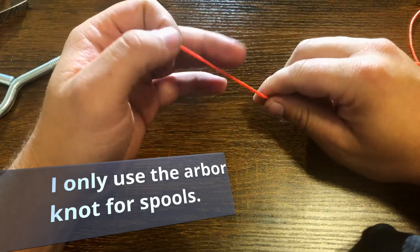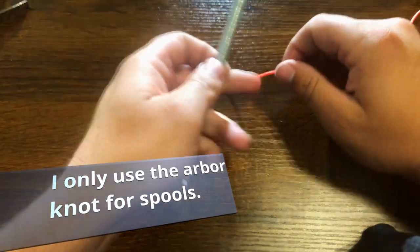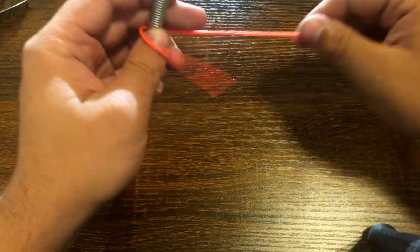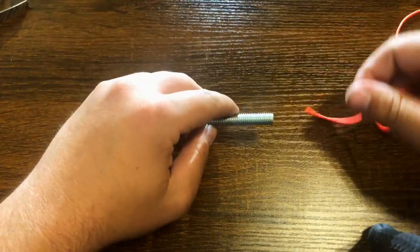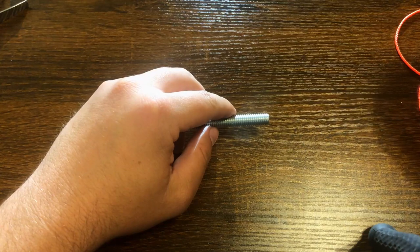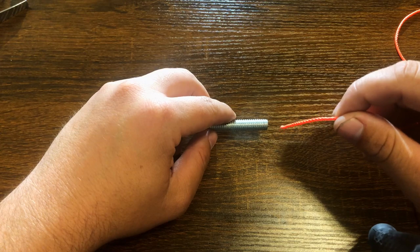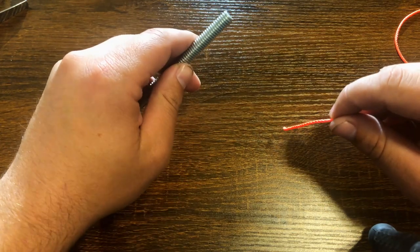So in order to start your Arbor Knot, typically you're gonna run your line around your spool. You'll run it around, you'll thread it through one of your guides and then if you're using a spinning reel you're gonna have your bail open.